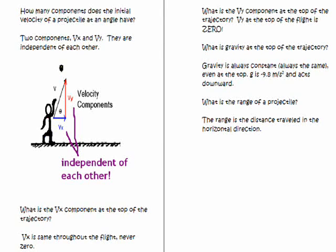How many components does an initial velocity of a projectile at an angle have? It has two. And we have to be able to calculate these two to do our final calculations that have to do with how far it travels. So they also are independent of each other as you can see in the diagram here.